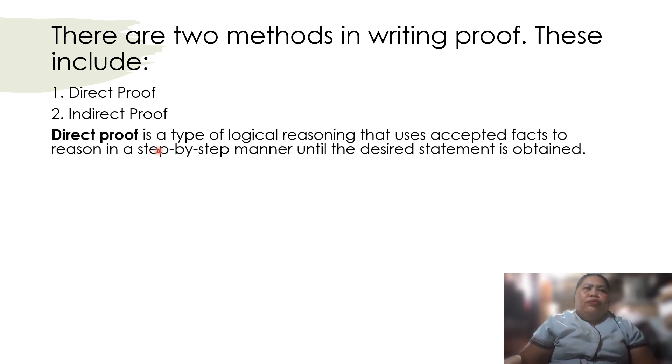A direct proof is a type of logical reasoning that uses accepted facts to reason in a step-by-step manner until the desired statement is obtained.